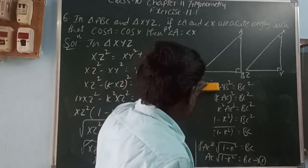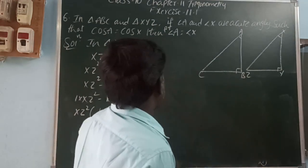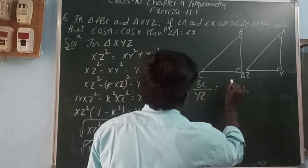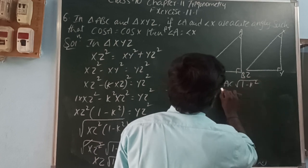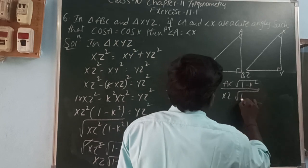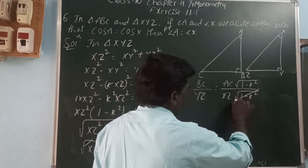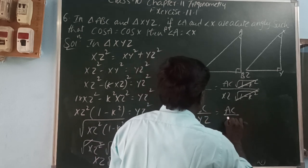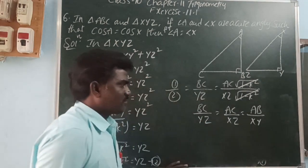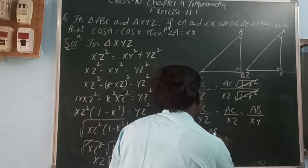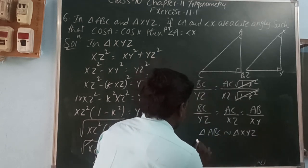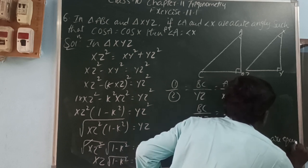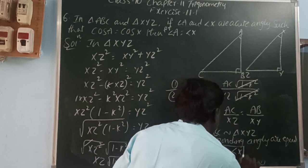Now dividing equation 1 by equation 2: BC divided by YZ equals [AC times square root(1 minus k squared)] divided by [XZ times square root(1 minus k squared)]. The square root(1 minus k squared) cancels, so BC by YZ equals AC by XZ equals AB by XY. Since all three side ratios are equal, therefore triangle ABC is similar to triangle XYZ. When corresponding angles are equal, angle A equals angle X. Hence proved.